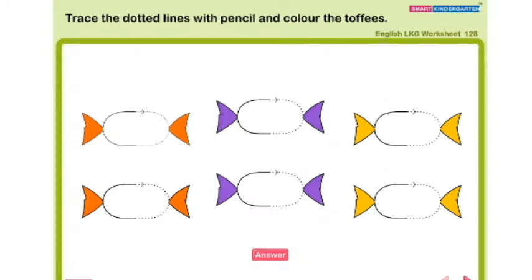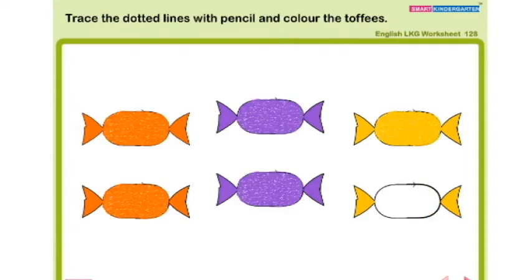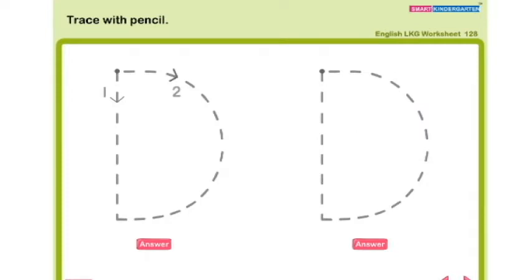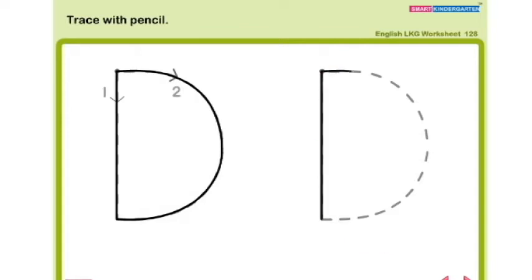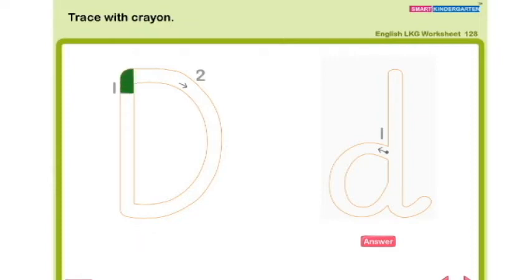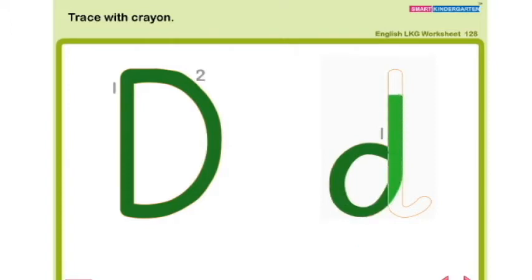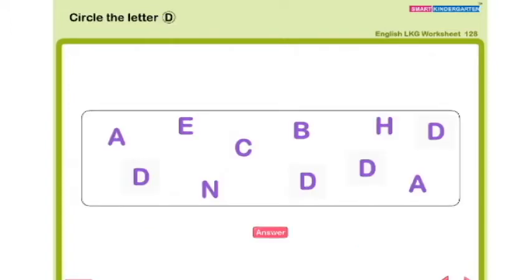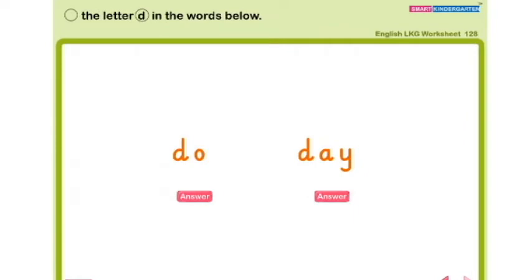Trace the dotted lines with pencil and color the toffees. Trace capital D with pencil. Trace with crayon. Circle the letter capital D. Circle the letter small d in the words below. Do. Day.